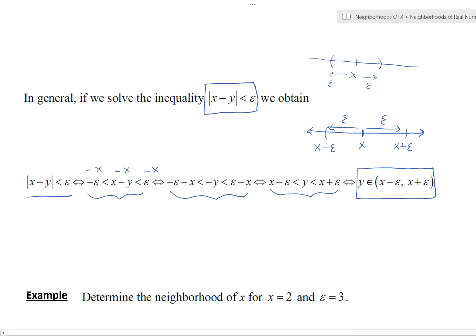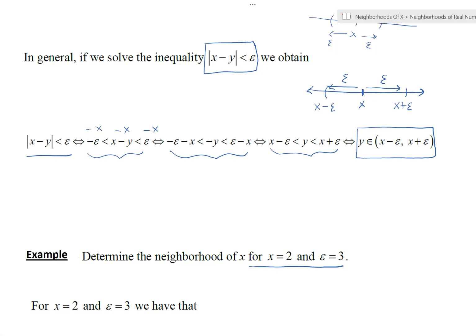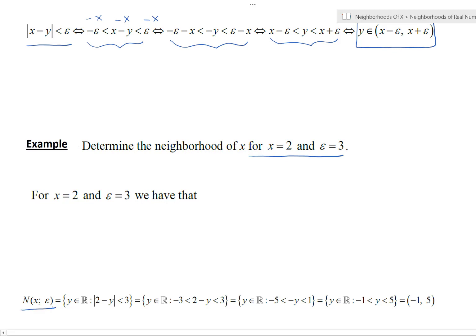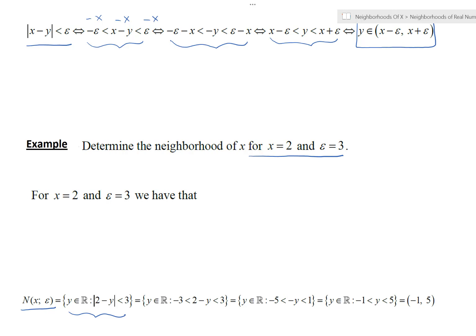Here's an example: determine the neighborhood of x for x equals 2 and epsilon equals 3. Using what we just saw, we get that the neighborhood of x with radius epsilon is, by definition, the collection of real numbers y such that the magnitude of 2 minus y is less than 3 — replacing x and epsilon in the formula.